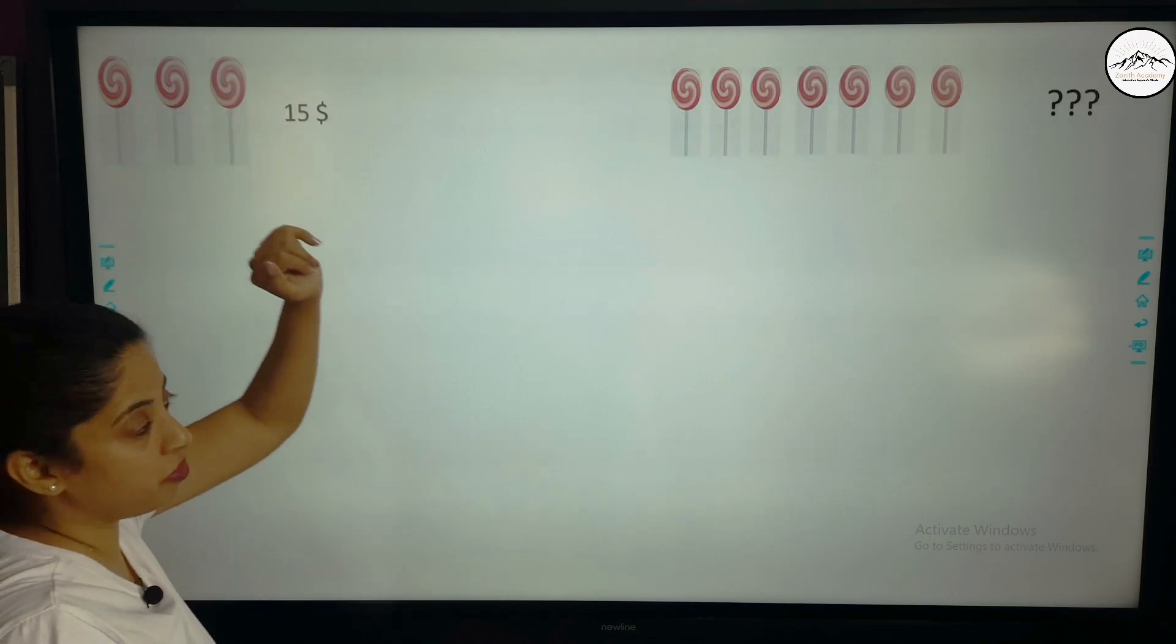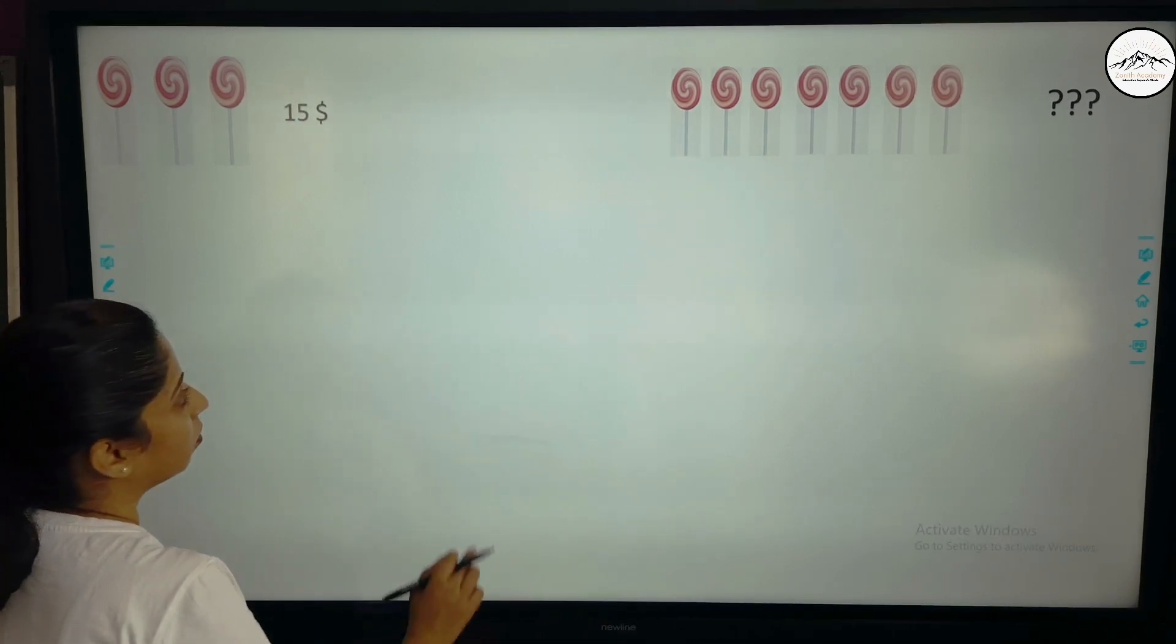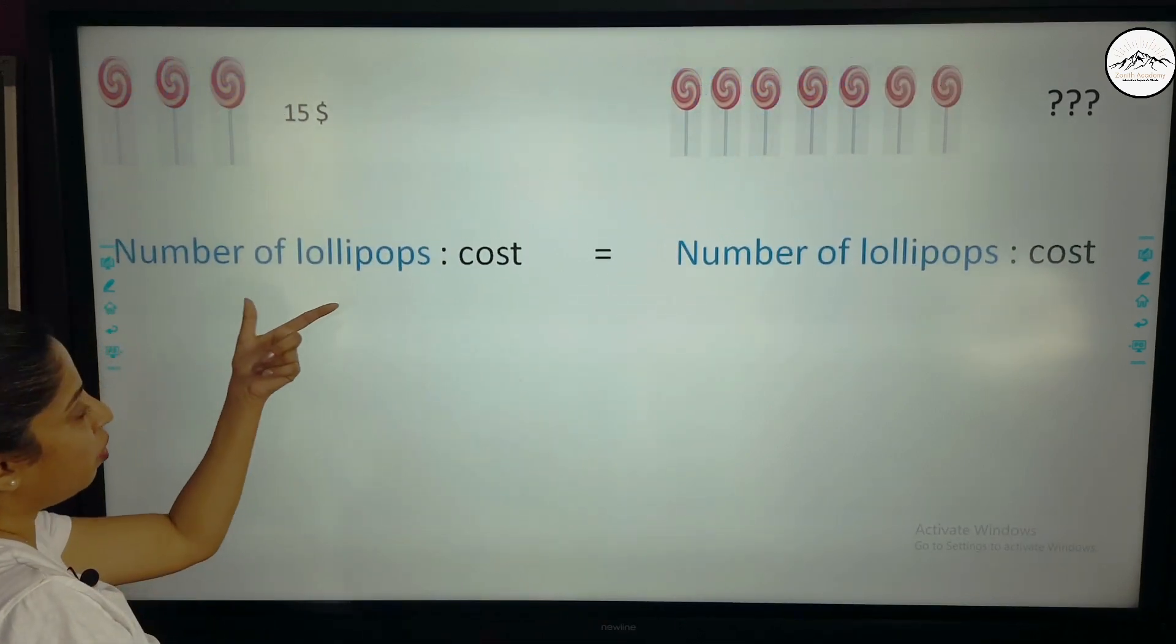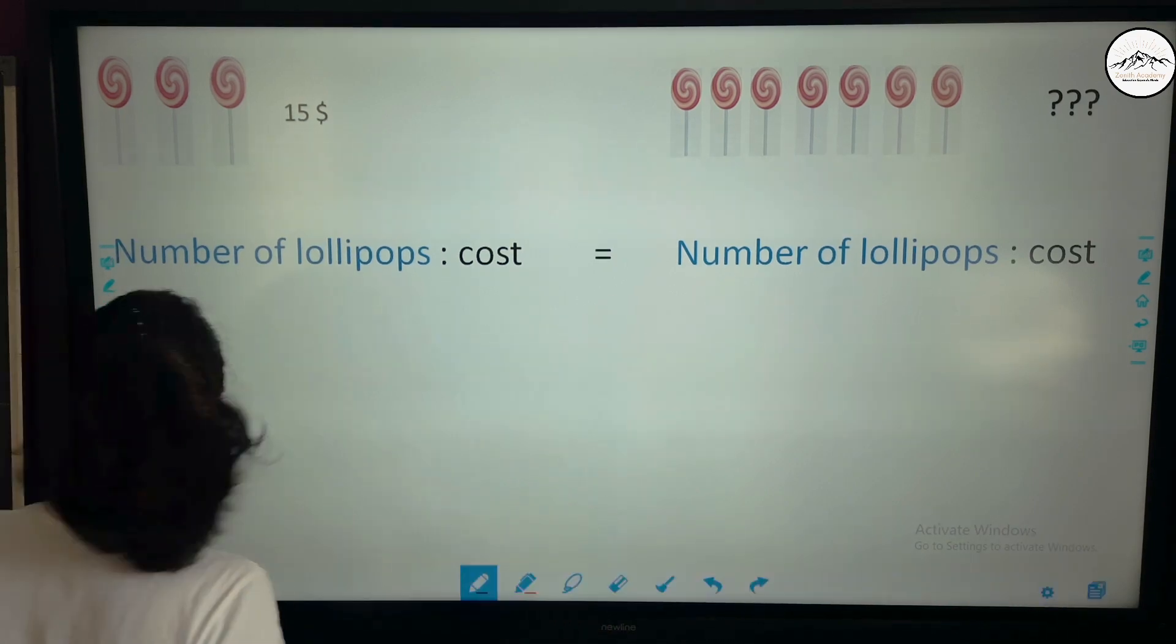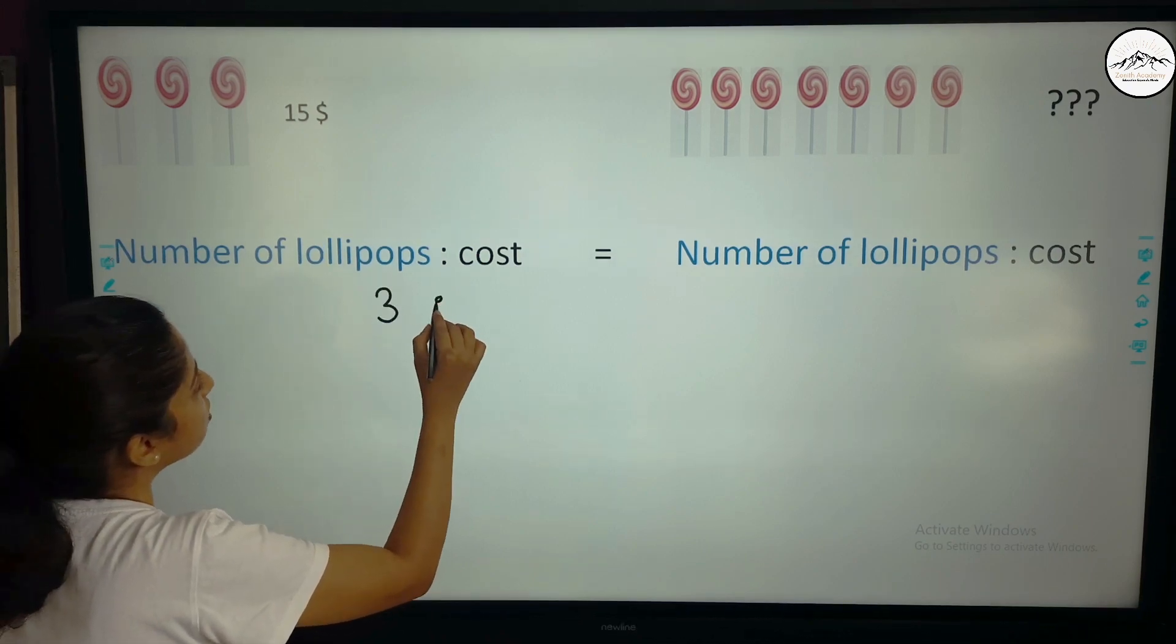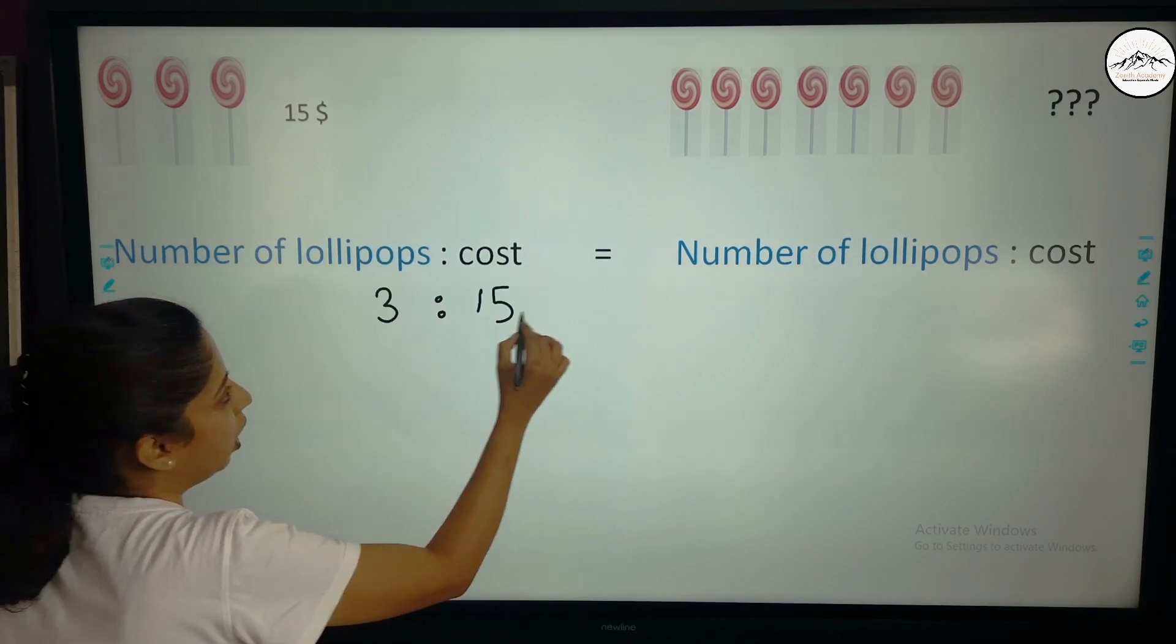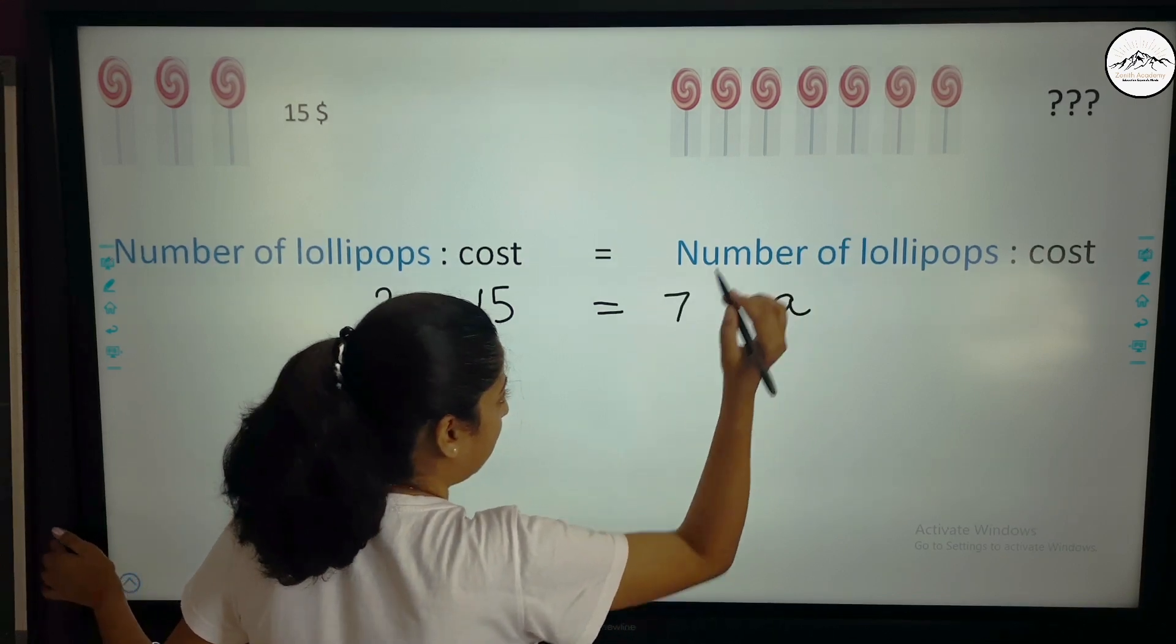Cost of 3 lollipops is 15 dollars. So cost of 7 lollipops is equal to what? So number of lollipops is to cost is equal to number of lollipops is to cost. So let me do it very quickly. This is 3 and cost is 15 dollar. And this is 7 and I don't know the cost. So I take the variable A.